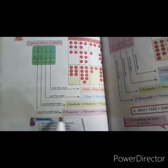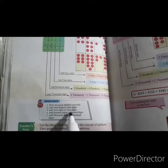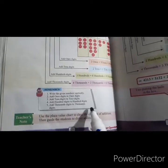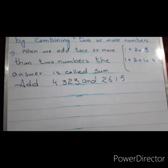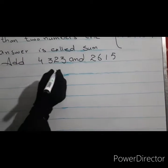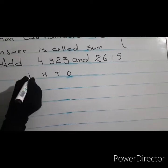And four thousand plus two thousand make six thousand. Remember, students, these steps: write the given numbers vertically — vertically means in column, up to down. Add the ones digit to ones, tens digit to tens, hundreds digit to hundreds, and thousands digit to thousands. Now we solve this question on the board.